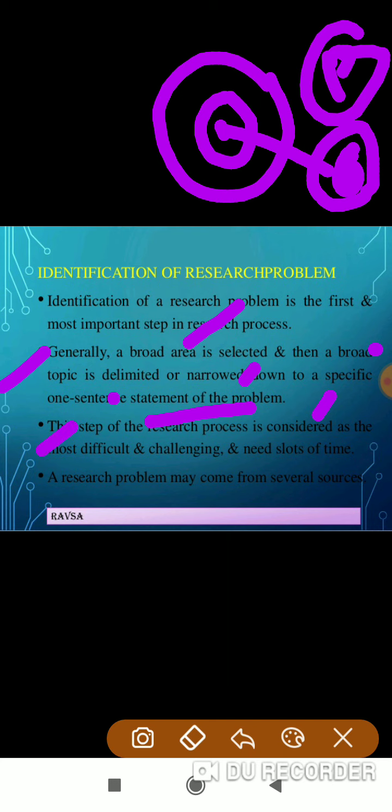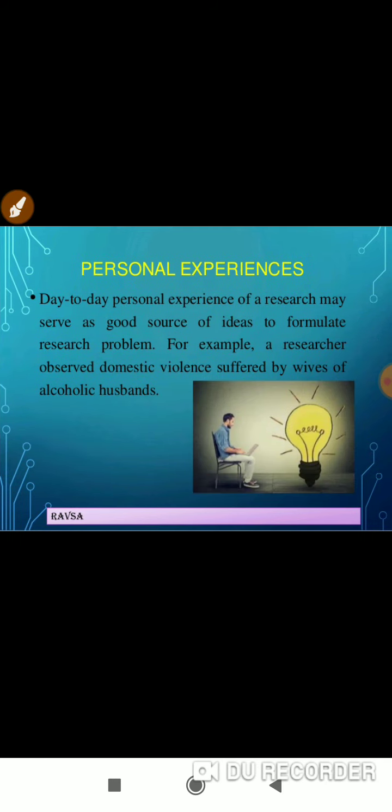We delimit our topic, narrow it down, and become very specific — this is called the specification of the research problem. This type of research process is considered the most difficult and challenging, and needs lots of time, because you have to select the best topic. A research problem may come from several sources — clinical, theoretical, practical, or community. In the next part, I will teach you the sources of research problem.